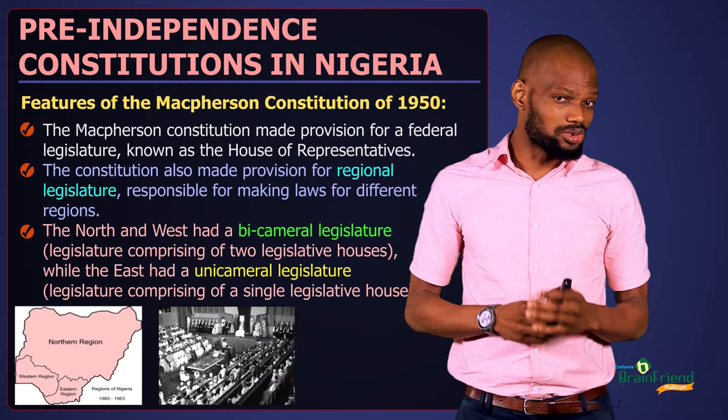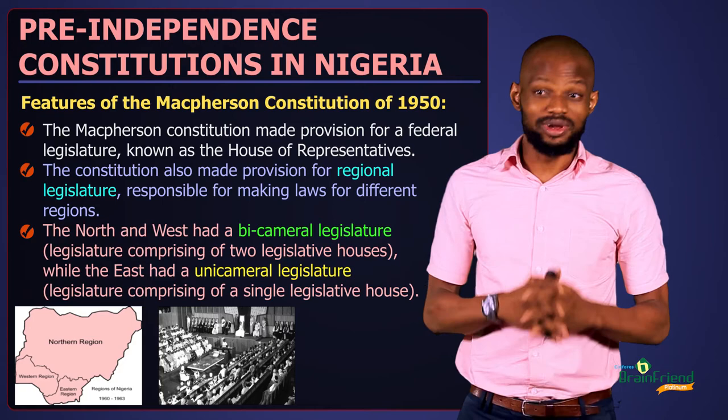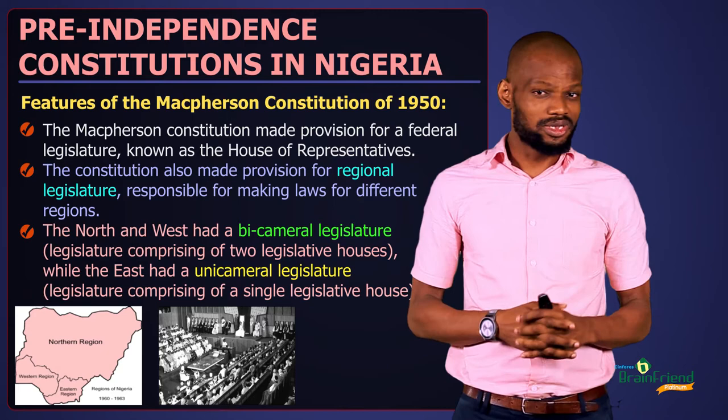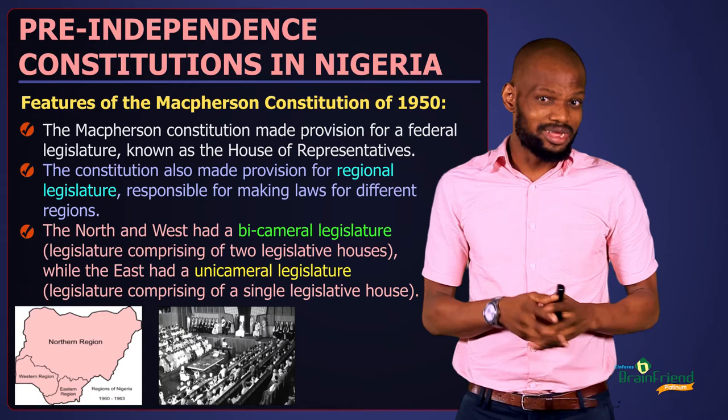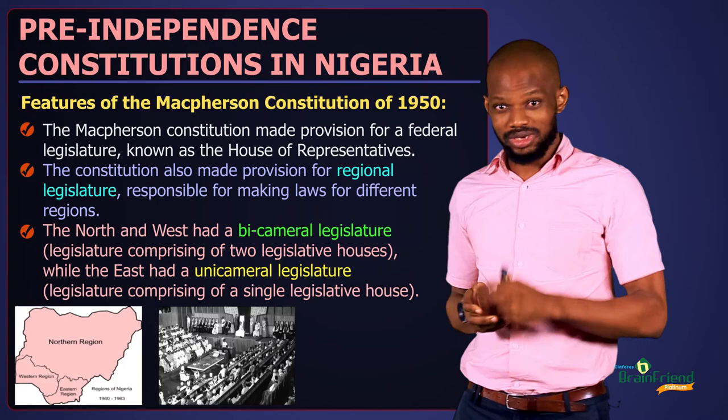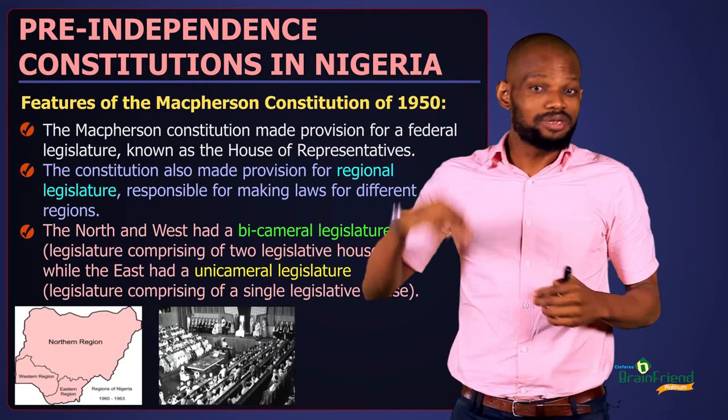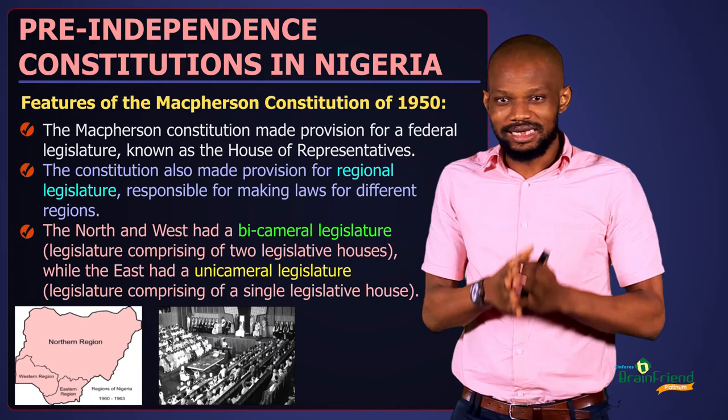Some features of the McPherson Constitution include: first, it made provision for a federal legislature known as the House of Representatives. What you know now as the House of Representatives was first created by the McPherson Constitution. The House of Representatives ensures equal representation of all parts of the country — it is a house containing representatives from all parts who come together to participate in the decision-making process.